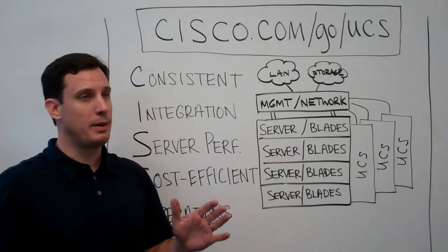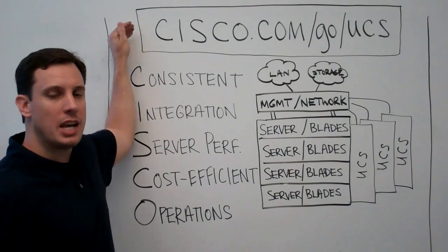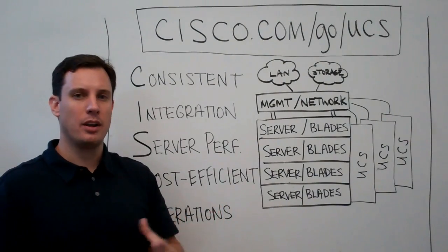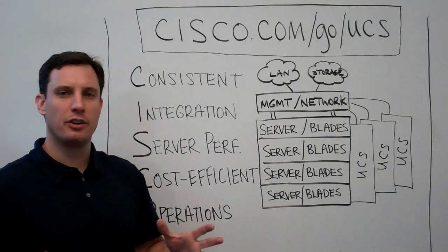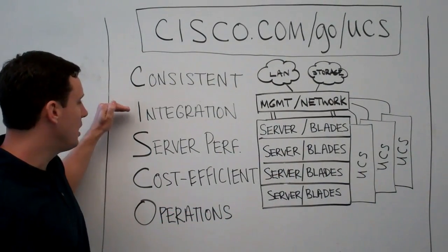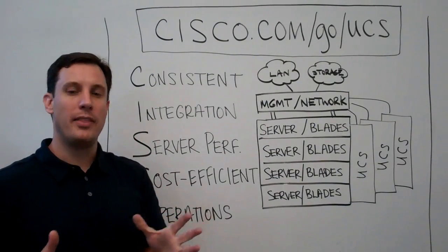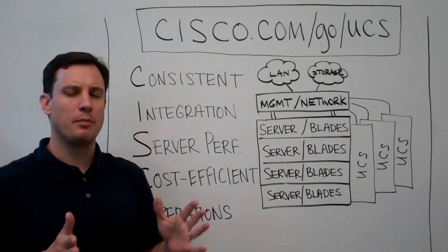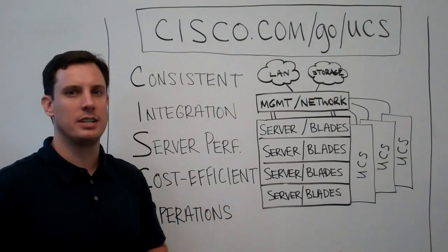If you forget everything we talk about, you can always go to cisco.com/go/UCS and all the details — actually much greater amounts of detail than we talk about — can be found there for you or your customers. We're going to make this as simple as possible using the acronym CISCO, C-I-S-C-O, to help you have a conversation with your customer about why the Cisco UCS system is the best application delivery platform on the market today.